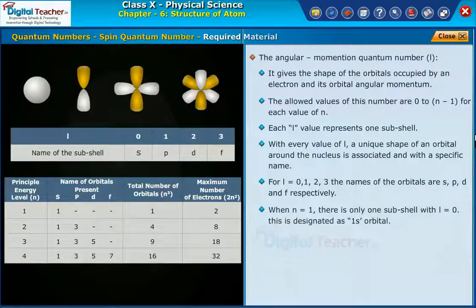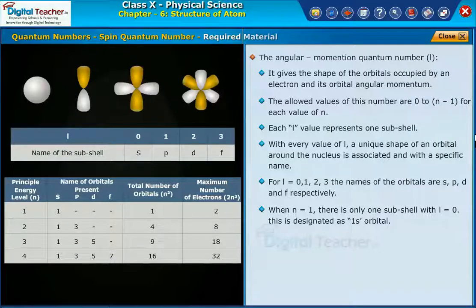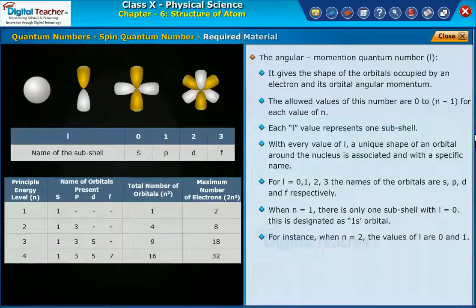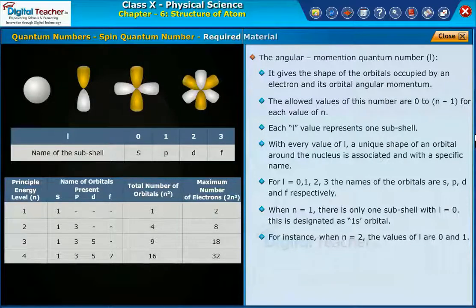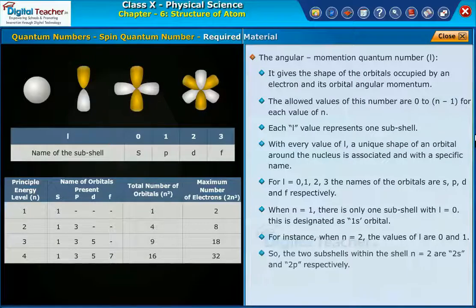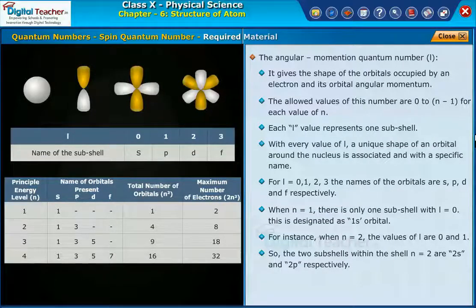When n is equal to 1, there is only one sub-shell with l is equal to 0. This is designated as 1s orbital. For instance, when n is equal to 2, the values of l are 0 and 1. So, the two sub-shells within the shell n is equal to 2 are 2s and 2p respectively.